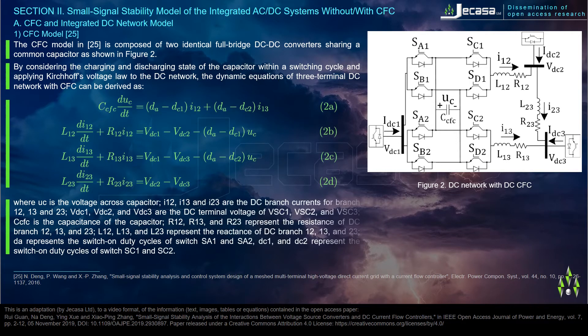In the dynamic equations, Vc is the voltage across the capacitor; i12, i13, and i23 are the DC branch currents for branches 12, 13, and 23; Vdc1, Vdc2, and Vdc3 are the DC terminal voltages of VSC1, VSC2, and VSC3; Ccfc is the capacitance; R12, R13, and R23 represent the resistance of DC branches; L12, L13, and L23 represent the reactance of DC branches; D represents the switch-on duty cycles of switches Sa1 and Sa2; Dc1 and Dc2 represent the switch-on duty cycles of switches Sc1 and Sc2.